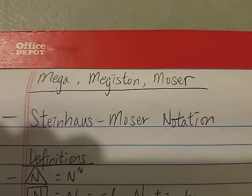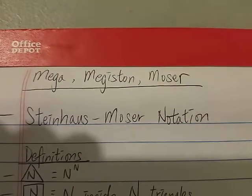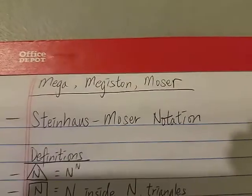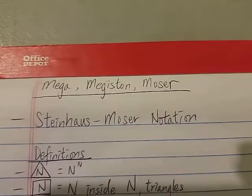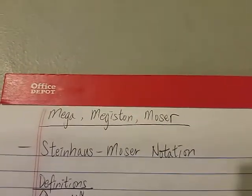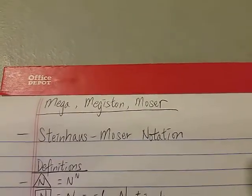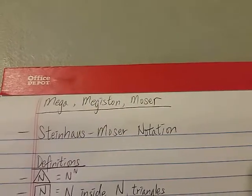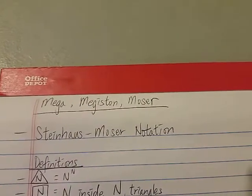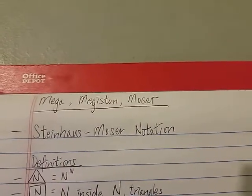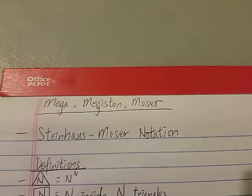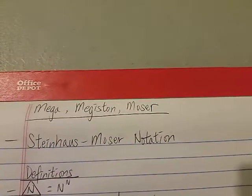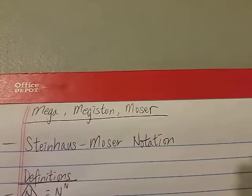Hi everyone, this is part 3 of big numbers. If you haven't watched the first two videos, make sure you watch them first before watching this one. Today we're going to talk about three numbers: the Mega, the Megiston, and the Moser.